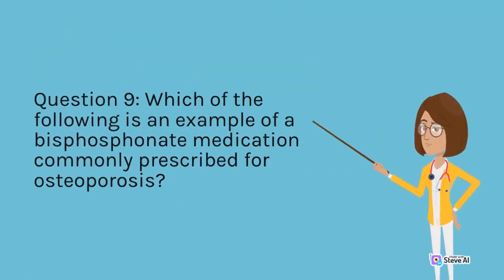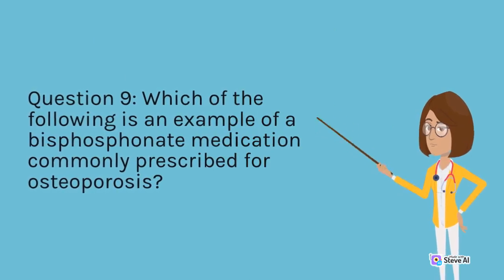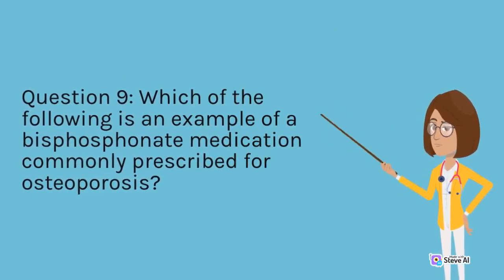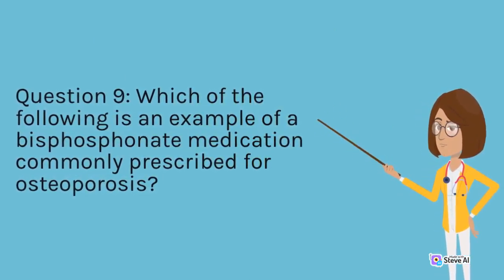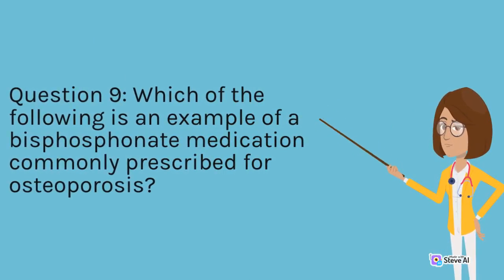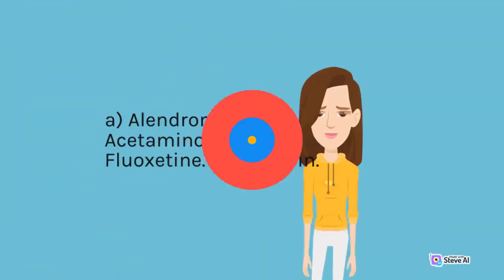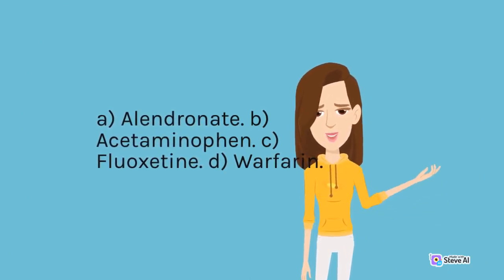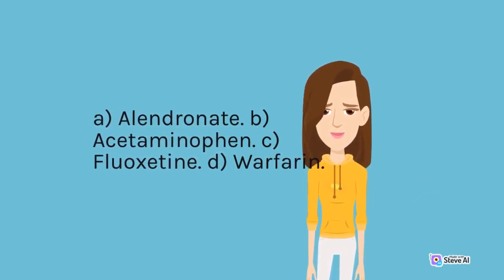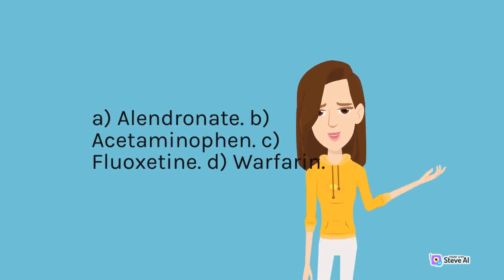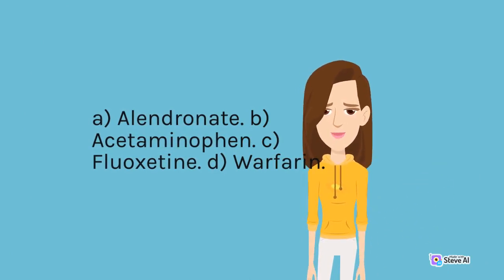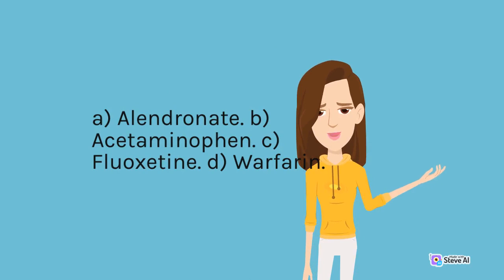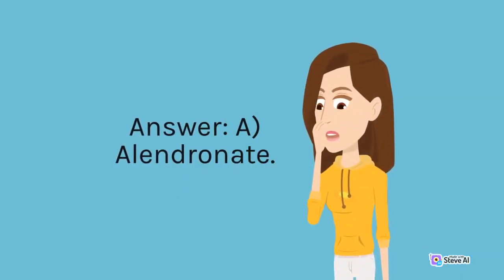Question 9. Which of the following is an example of a bisphosphonate medication commonly prescribed for osteoporosis? A. Alendronate. B. Acetaminophen. C. Fluoxetine. D. Warfarin. Answer: A. Alendronate.